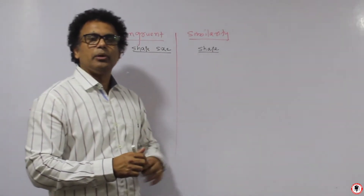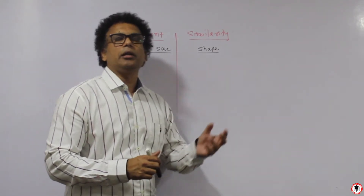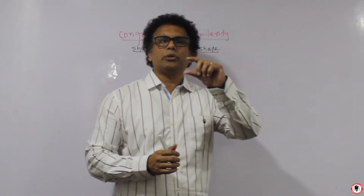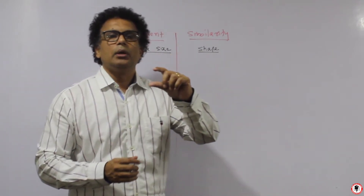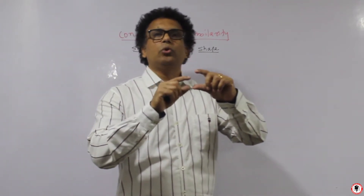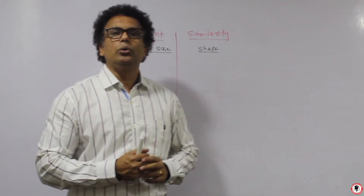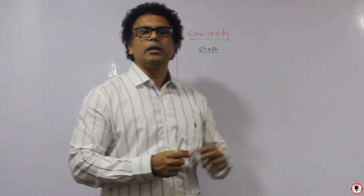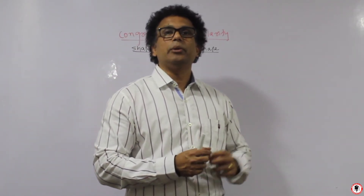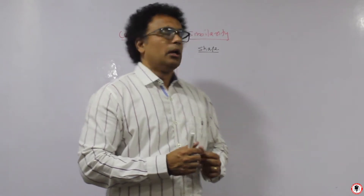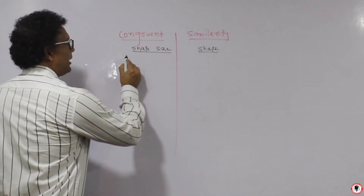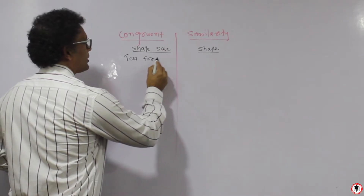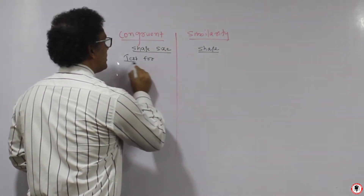Congruent means exactly the same. Even for similarity, if you click a snap of yourself, you get a small photo. This photo is exactly similar to how you are looking — it won't be of your actual size. So we say your photo is similar to how you are looking. Now we will do the test for similarity and test for congruence.